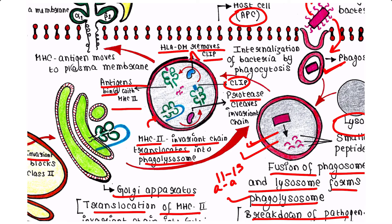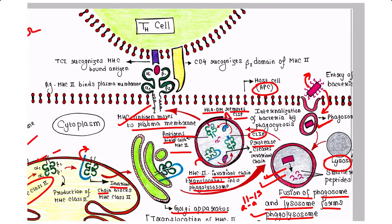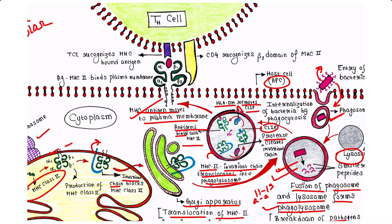The thus-formed MHC–antigen complex leaves the phagolysosome and moves to the plasma membrane. Once this complex reaches the cell surface, the helper T cell, or TH cell, can recognize it.